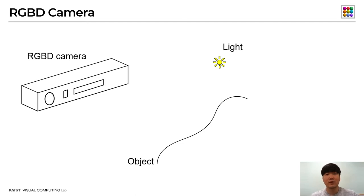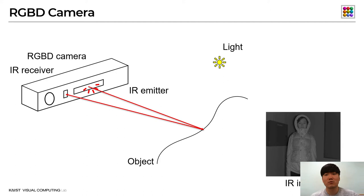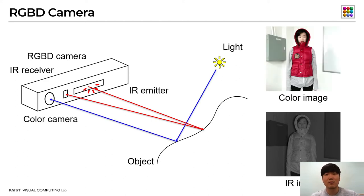In the conventional RGB-D camera, there are two different types of sensors to capture color and depth information. First, there is an active time-of-flight imaging module which captures depth information of the scene; an infrared light module illuminates the scene with time modulation, and the infrared image sensor captures the reflected light over the surface. Second, there is a color camera that captures color appearance of the scene within the visible spectrum, capturing the reflected light from the surrounding environment illumination.